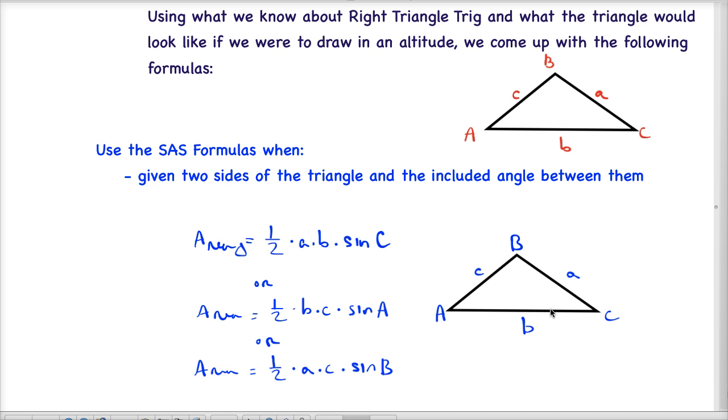So when I'm given the values of a, b, and angle c, I can use this formula right here and I plug in for a, I plug in for b, and I plug in the angle measure for c, and I can determine the area of this triangle now.